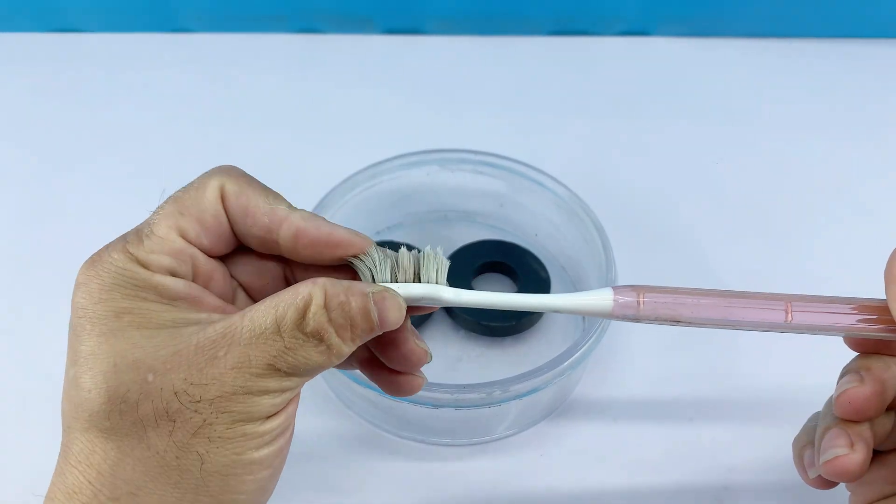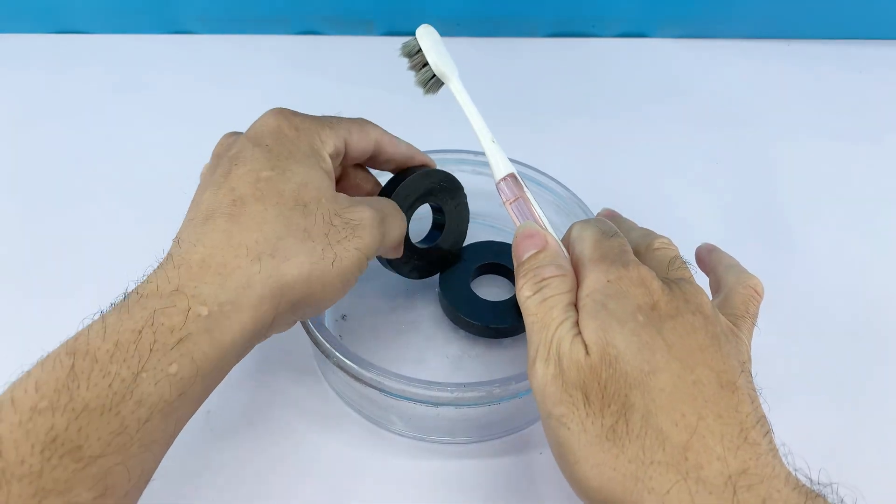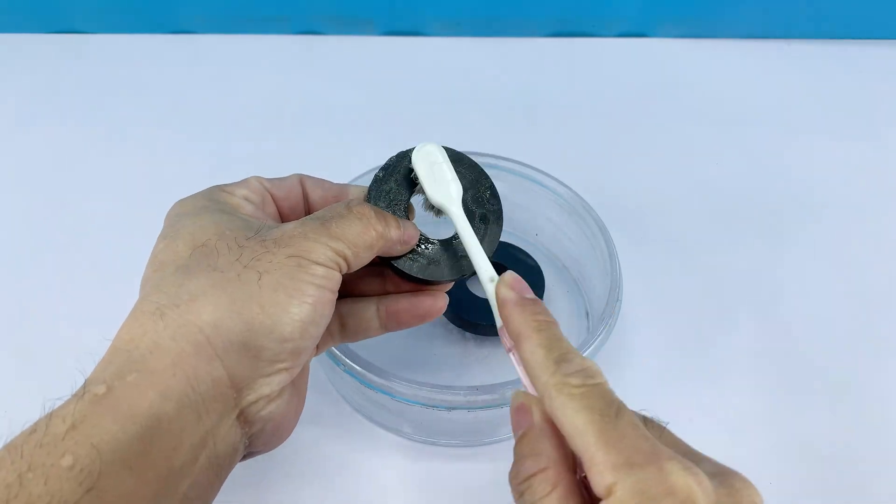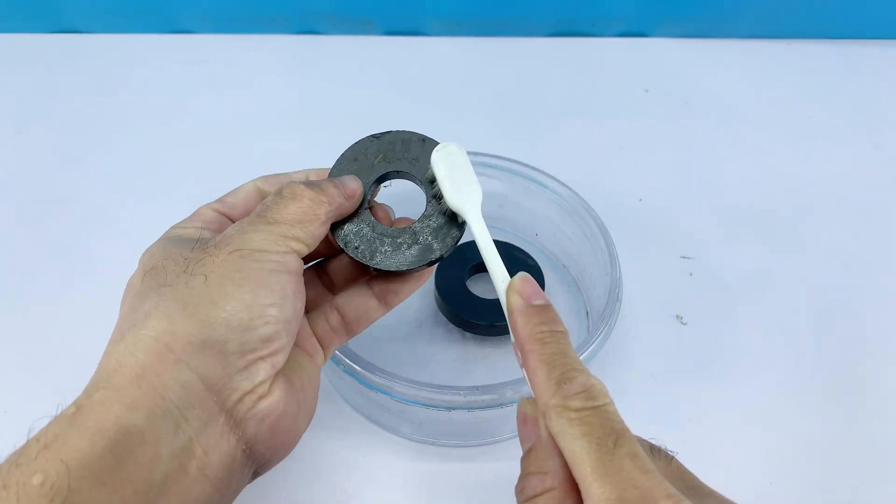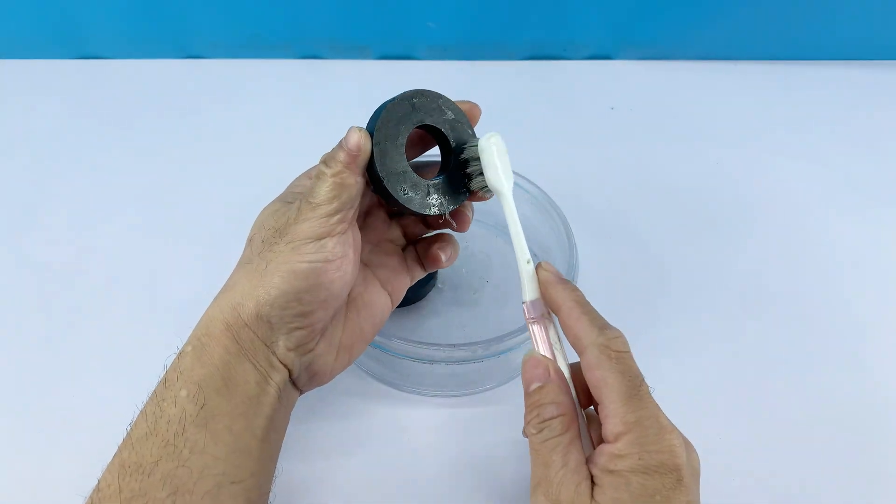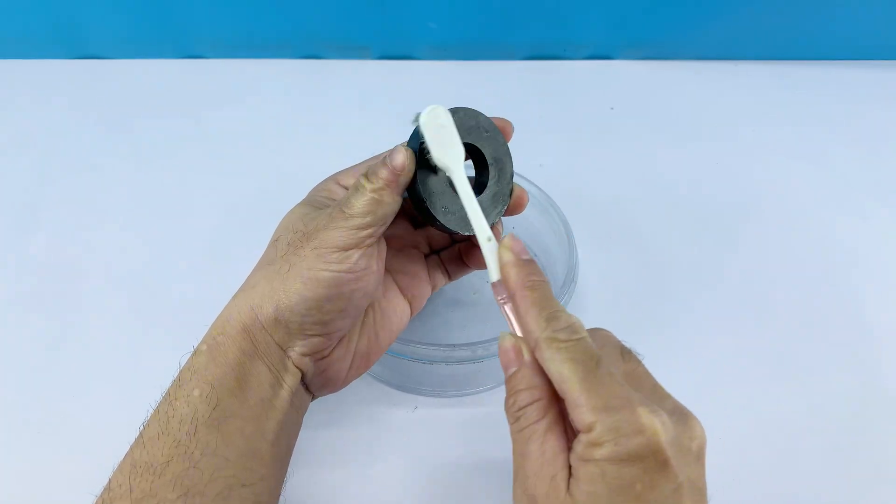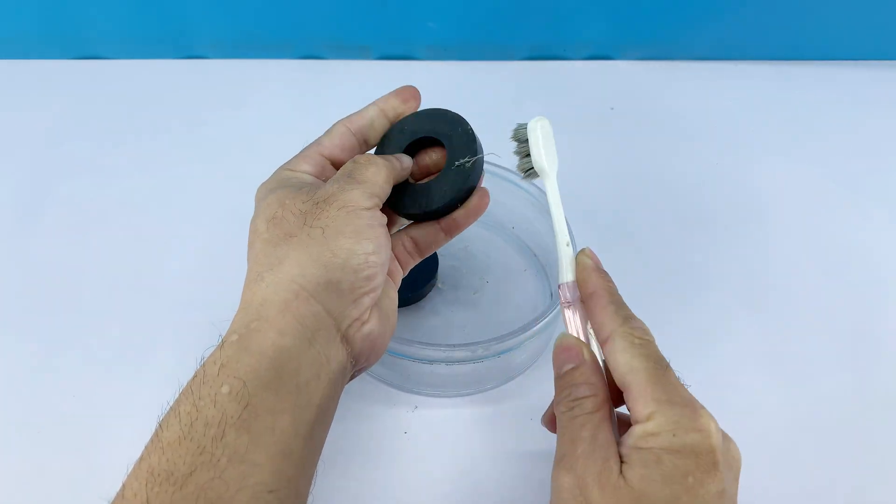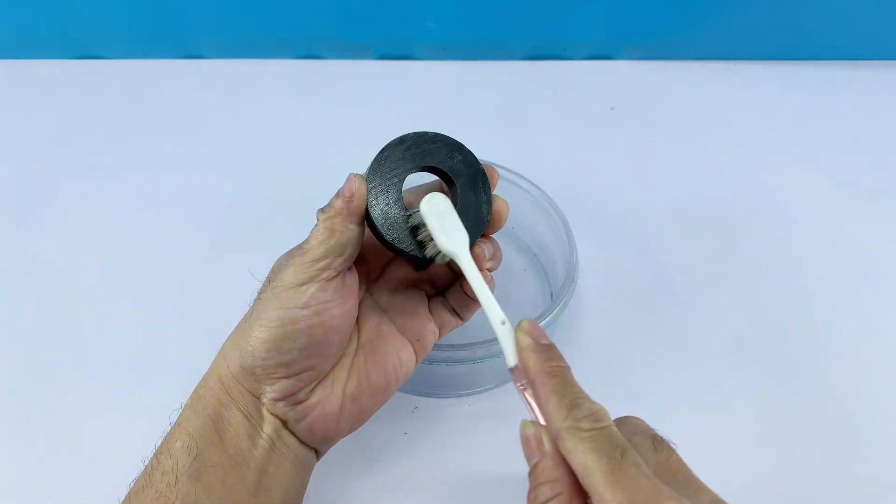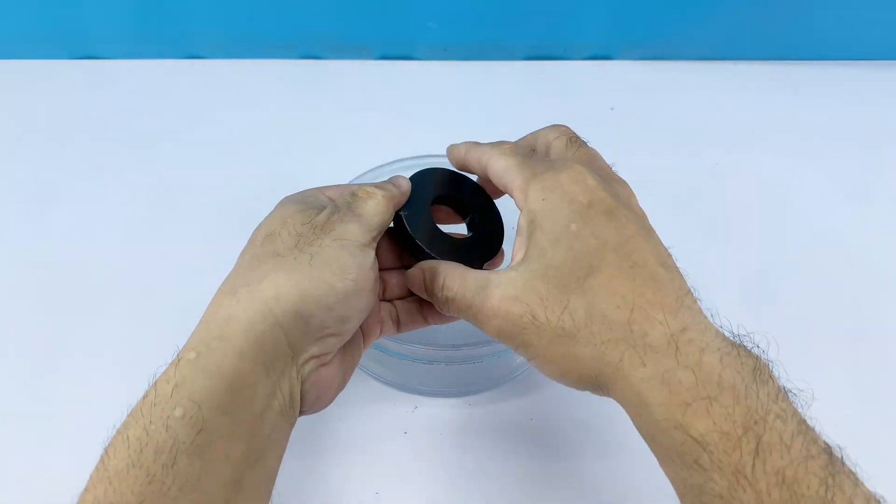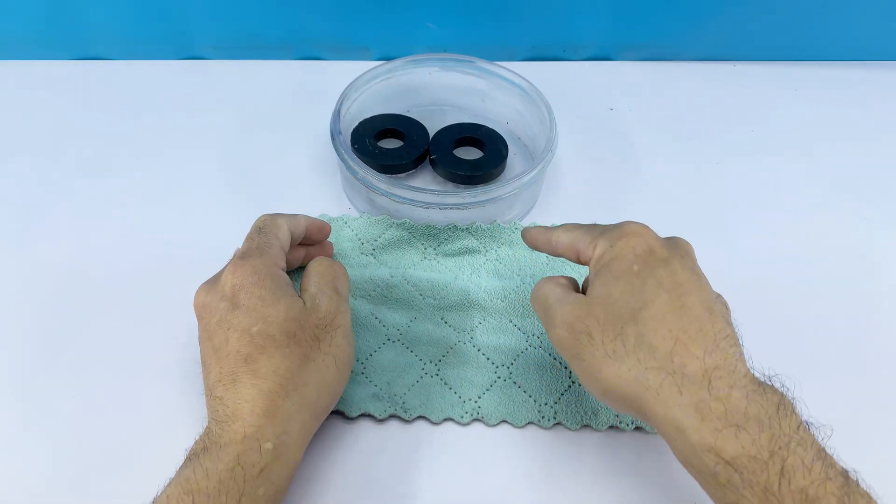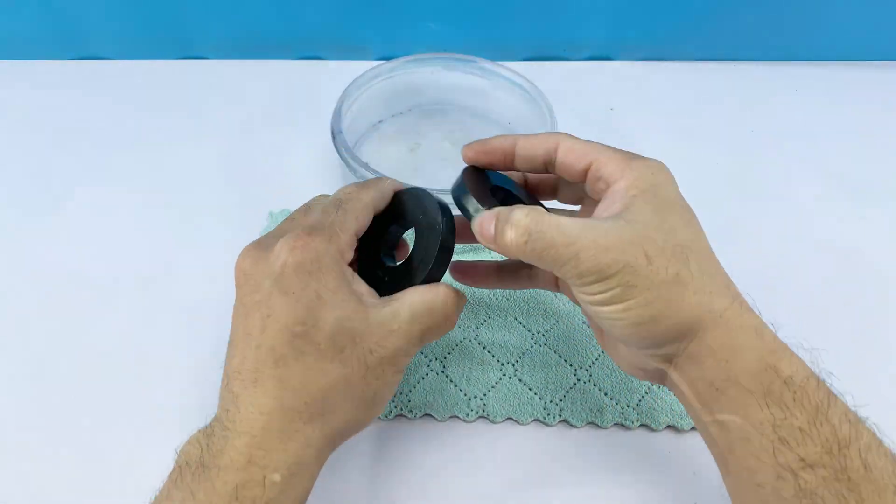I'll take a toothbrush and scrub away all the loosened grime. It's important to get into every crevice to ensure the ferrite material is completely clean. A clean surface is crucial for optimal electrical conductivity and efficient coil winding later on. After a good scrub, I'll dry them off completely with a soft cloth.